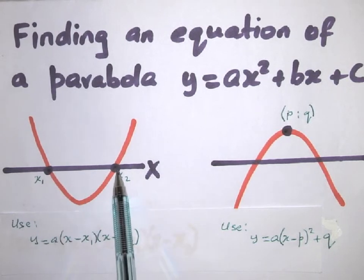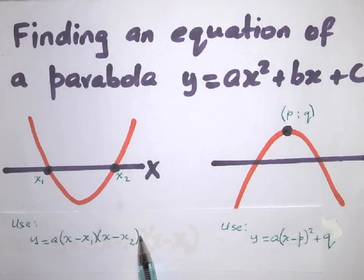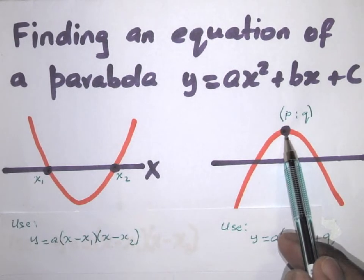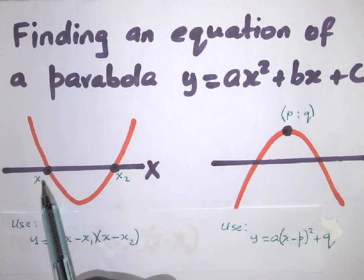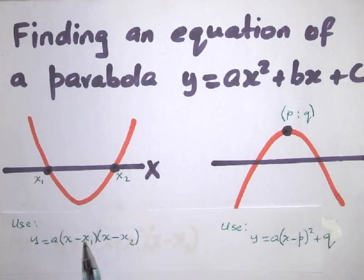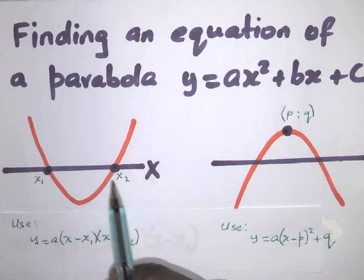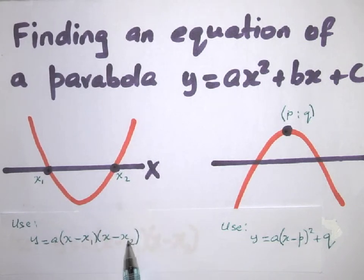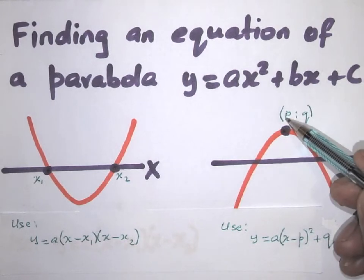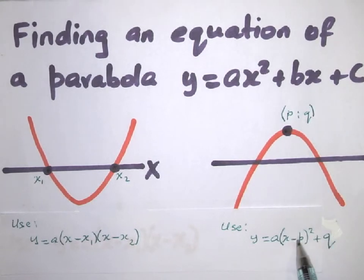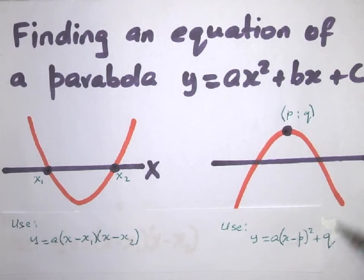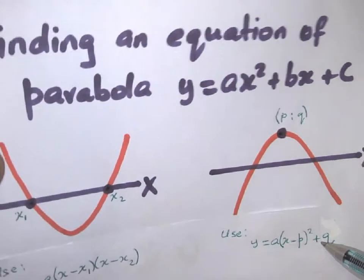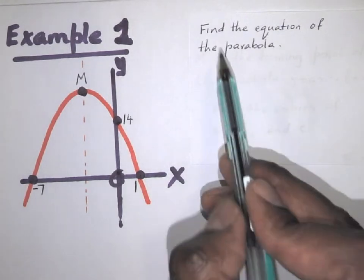If you are given the x-intercepts, you use the x-intercept formula. If you are given the turning point coordinates, you use the turning point formula. Notice that for x1, you put minus x1 in the bracket; for x2, you put minus x2; for p, you put minus p. But for q, you don't change the sign — it stays positive q.